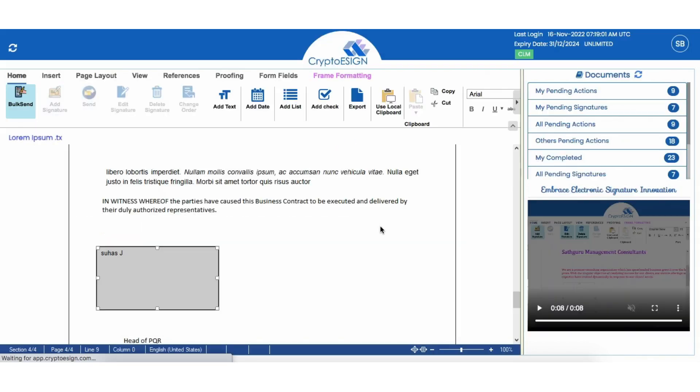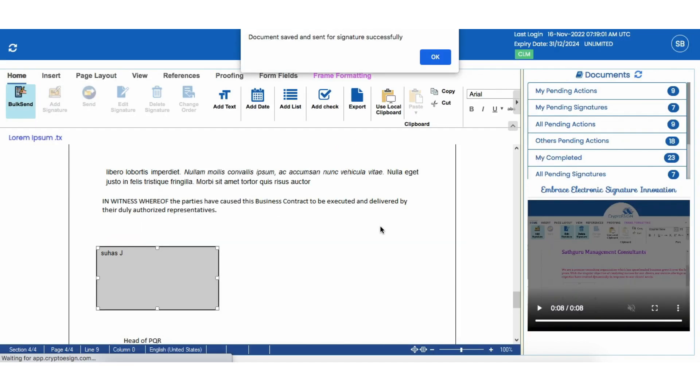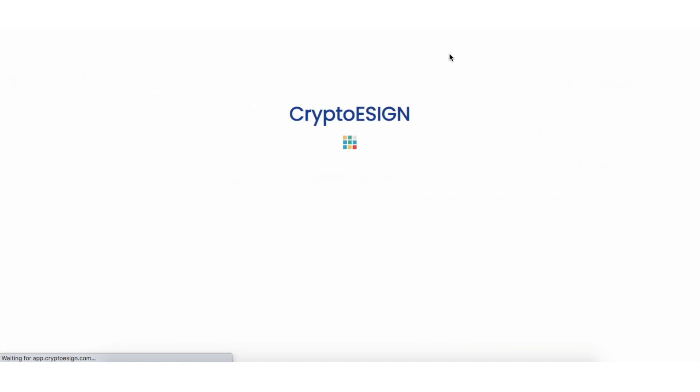The signatory will receive the document for signature via email. Once the signatory signs the document, the initiator, reviewer, owner, and signatory will all receive the signed document via email.